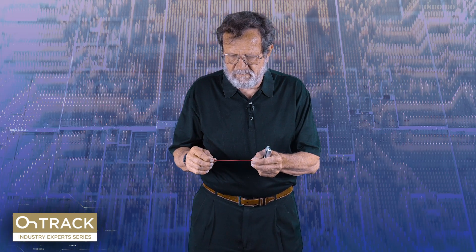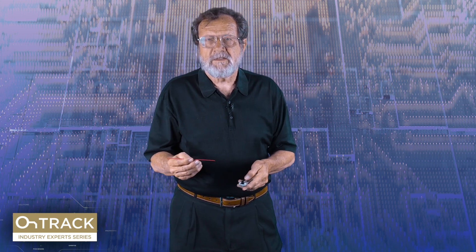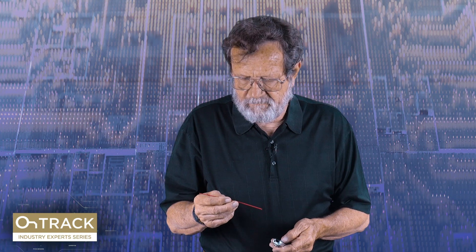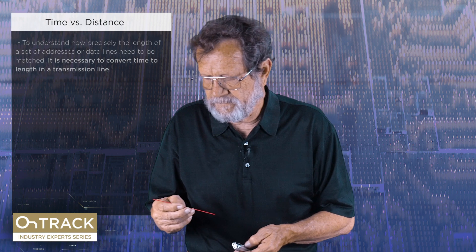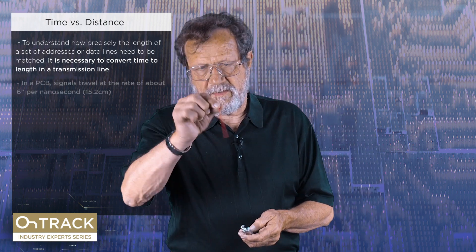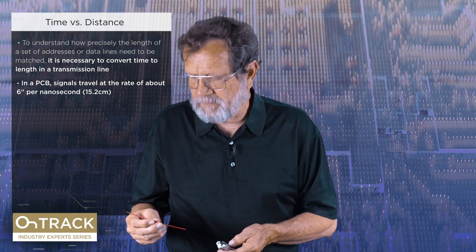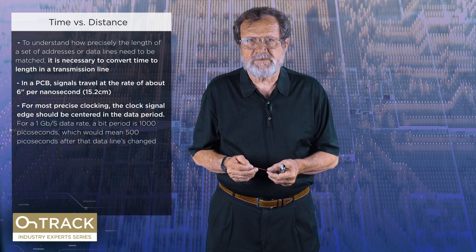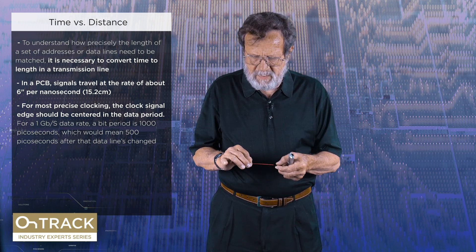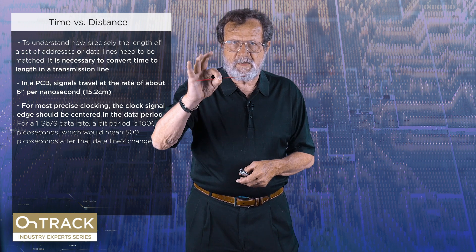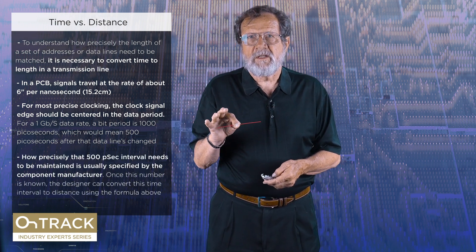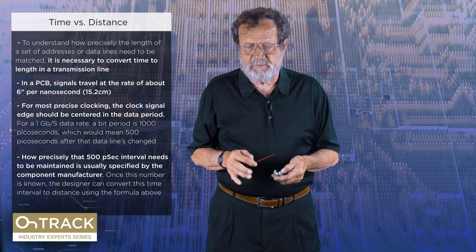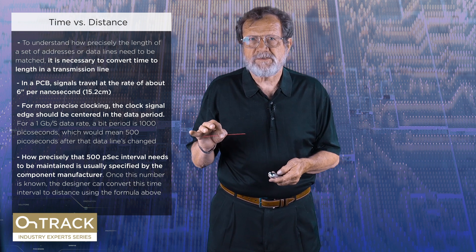It follows that we want to make sure that the bit lines are lined up as well so that we clock them in the middle. Exactly how tightly you have to do the length matching depends on what the bit period is. We want to convert time to distance to figure out what accuracy we need — six inches per nanosecond is the rate of signal travel in printed circuit boards. A gigabit-per-second bus has a bit period of 1,000 picoseconds. If we stagger the clock by half a bit period, that's 500 picoseconds or three inches. You can take these examples and convert whatever the data rate is of a particular bus to see how hard you have to work to match length.